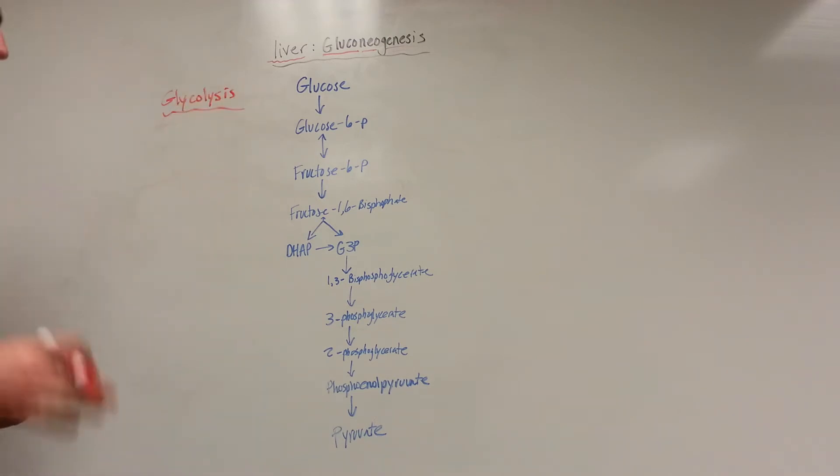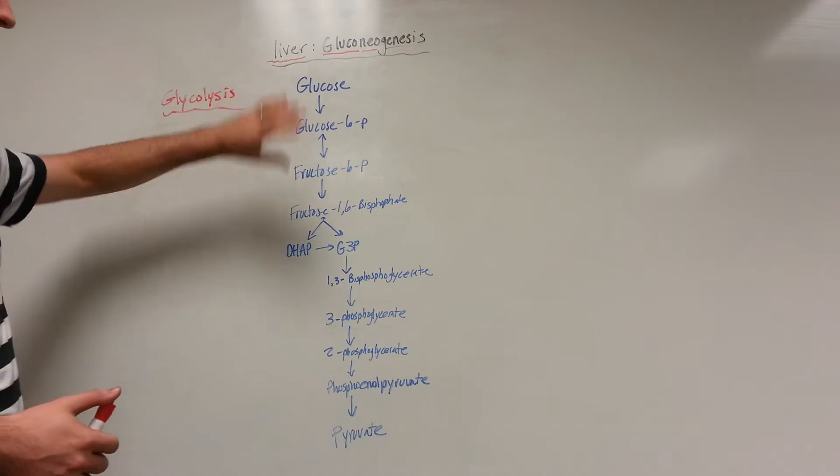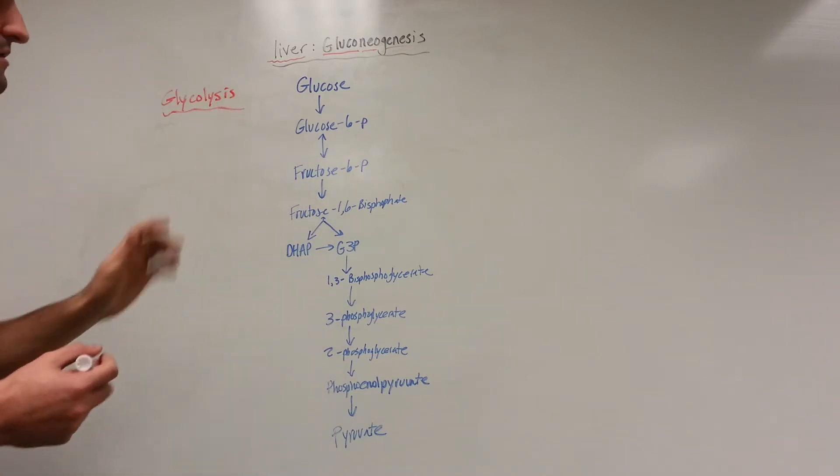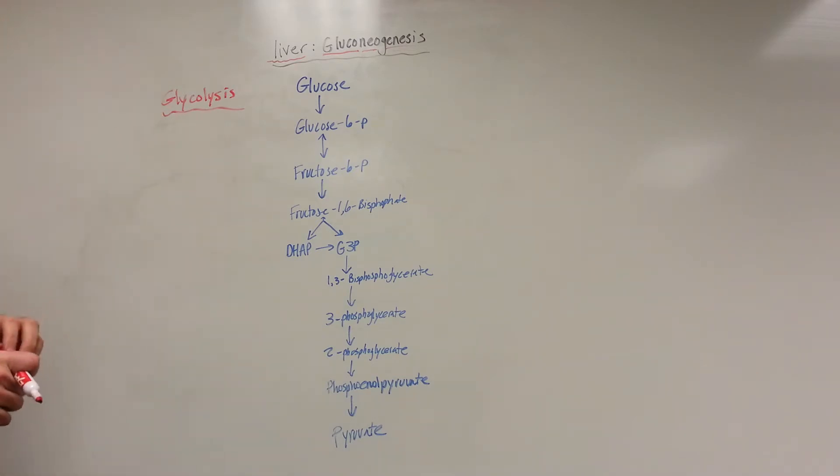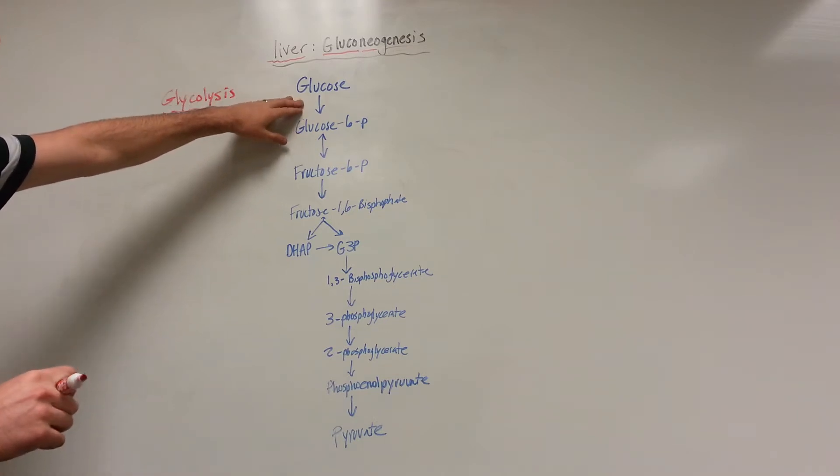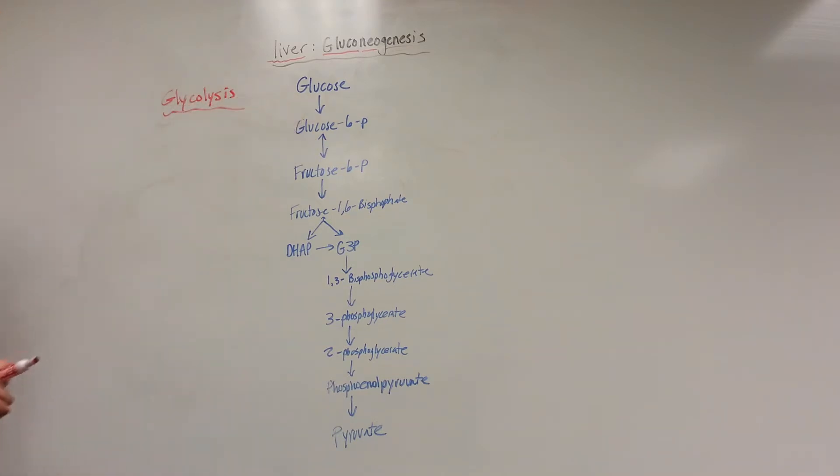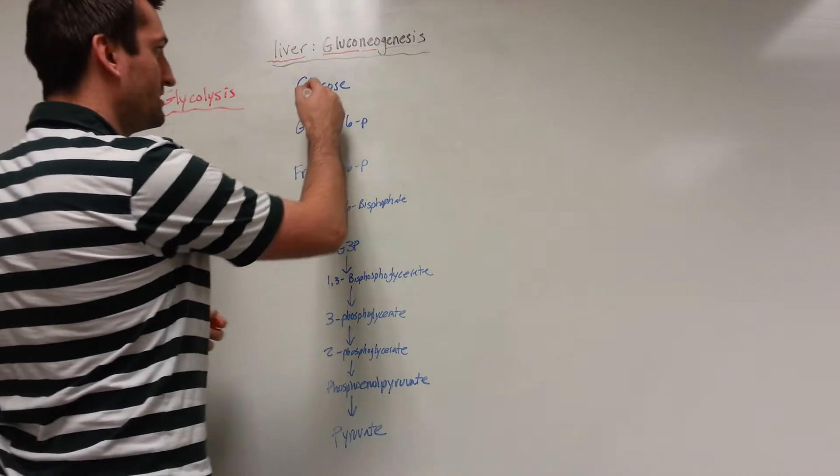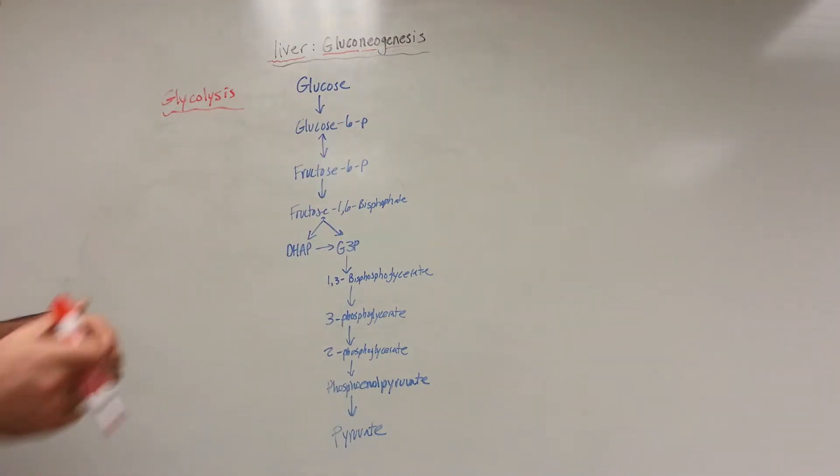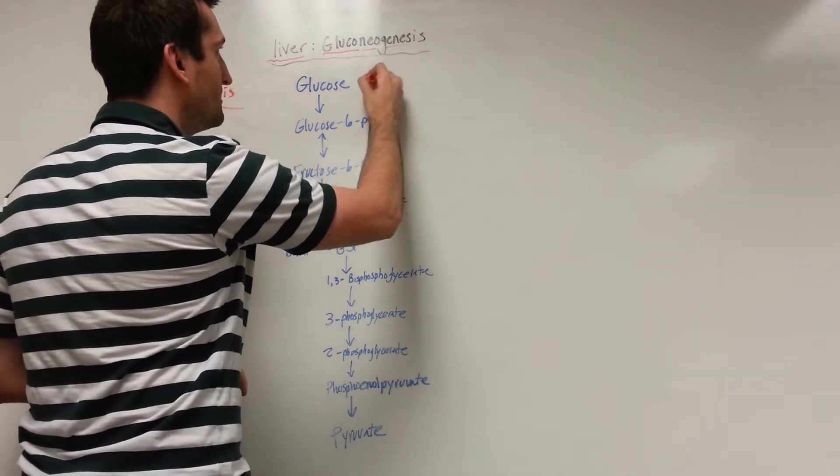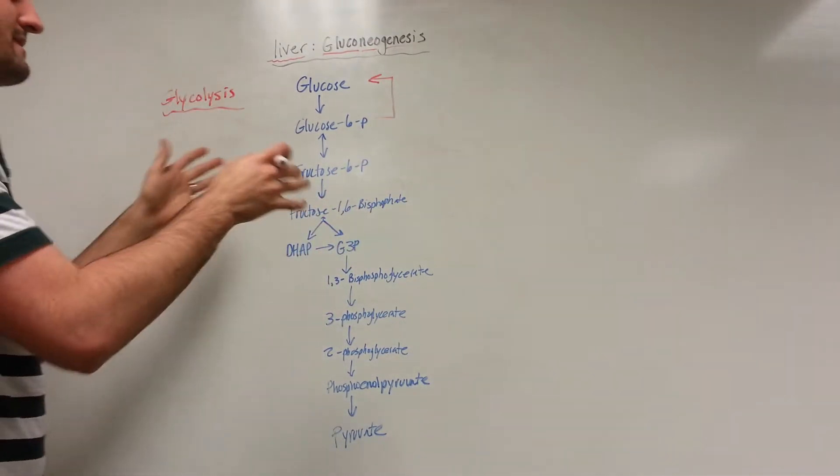We're going to focus on gluconeogenesis in this video. I have written in the whole mechanism but we're going to focus on some key enzymes. For the most part, some enzymes that catalyze this reaction in the forward reaction also catalyze it in the backwards reaction. However, there are some steps that are irreversible, meaning they only go one direction. For example, glucose to glucose 6-phosphate, you have the hexokinase and the glucokinase - those will be irreversible steps, so we're going to need an enzyme to bypass that.